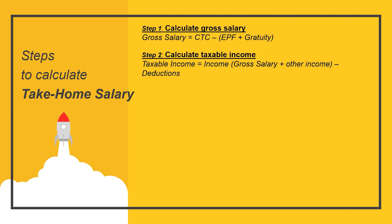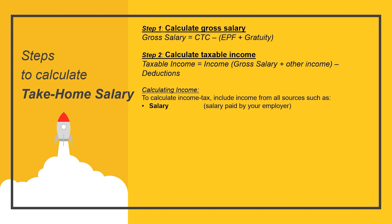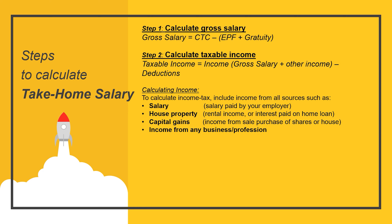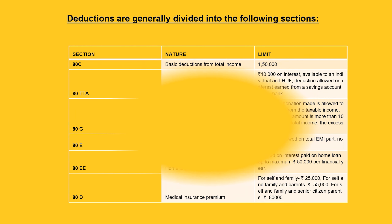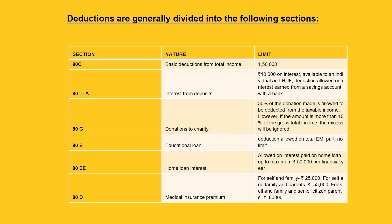Step 3: Calculate income tax — include income from all sources such as salary, house property, capital gains, income from any business or profession and other sources. For HRA deduction, the HRA deductible is the least of: the total HRA received from the employer in the financial year; the actual rent paid in the year minus 10% of the basic salary; or 50% of the annual basic salary if staying in a metro city, or 40% of the annual basic salary if staying in a non-metro city.